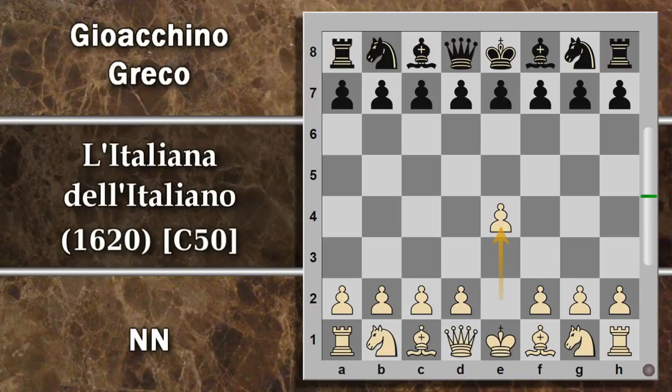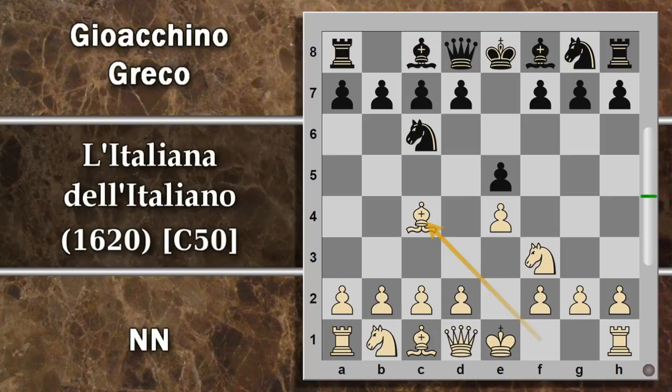Si comincia con E4, Gioachino Greco risponde E5, quindi partita di Re. Questa sembra completamente normale e rimane normale con cavallo F3, cavallo C6, alfiere C4. Si entra in una partita italiana, che prende questo nome probabilmente proprio da lui, dato che a quel tempo era già un'apertura giocata da Gioachino Greco, che era italiano calabrese per essere precisi.